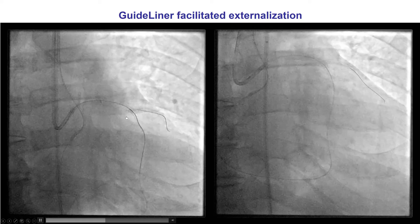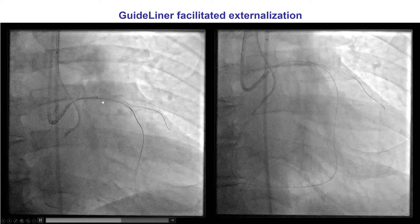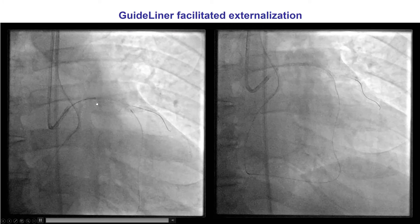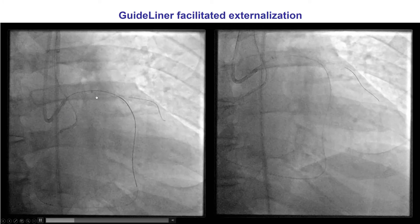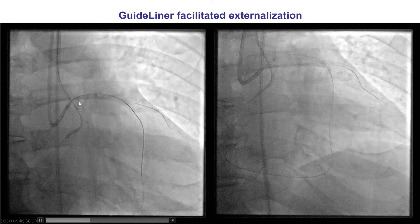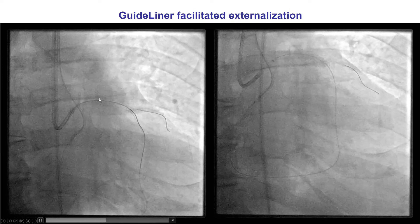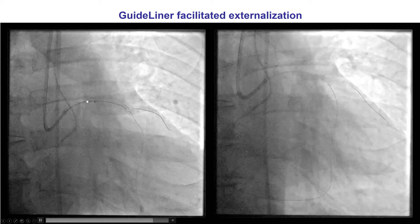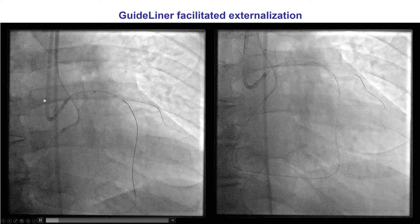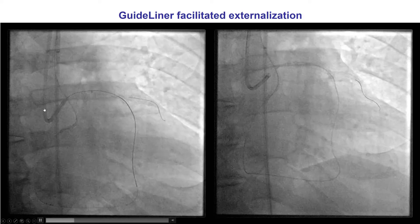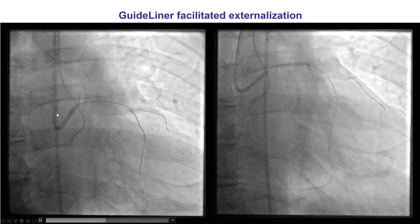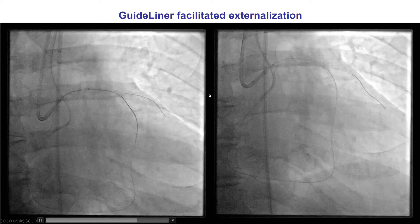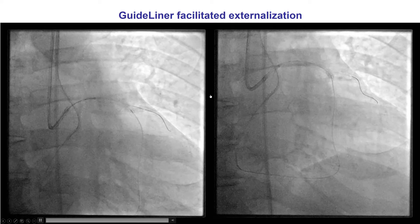There is always concern when advancing retrograde wires into the LAD and the left main. We inserted a guide liner that was used as the target for the retrograde guidewire to enter into the antegrade guide catheter. We then externalized an R315 guidewire.